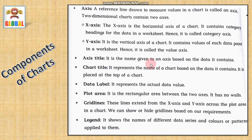Next is axis title. It is the name given to an axis based on the data it contains. Next is a chart title. It represents the name of chart based on the data it contains. It is placed at the top of a chart. Next is a data label. It represents the actual data values with the help of which we draw that chart. Then, next is plot area. It is a rectangular area between two axis. It has no walls.